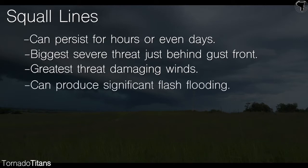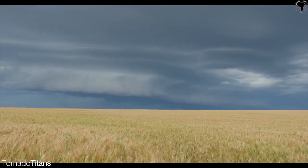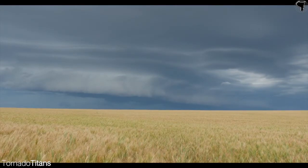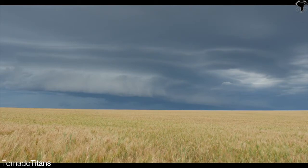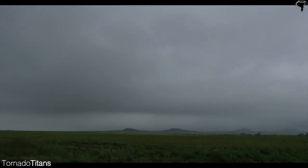Another threat is significant flash flooding, especially in situations where the line itself is moving slowly as individual cells move over the same areas repeatedly. Linear systems are easy to track and predict as they typically follow a pretty straight path. Lines of storms can be incredibly damaging, and thus you should always pay special attention when one is approaching your area.